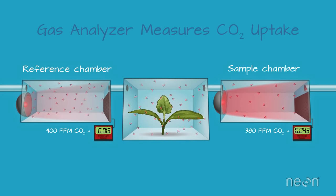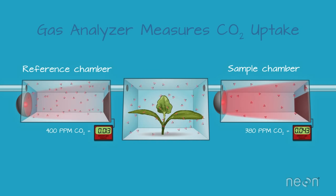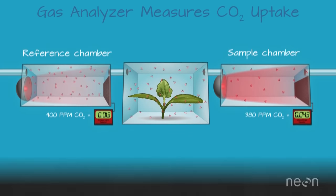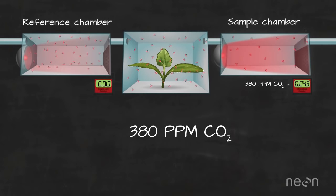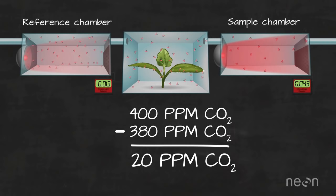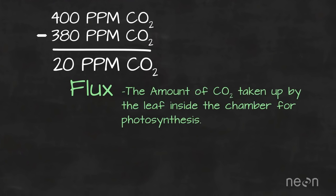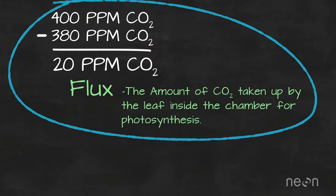We can control the volume of air moving through the chambers using a flow meter, so we know how much air is in each chamber. Here comes the interesting part. We can calculate the difference in the amount of CO2 measured in our reference chamber compared to the CO2 measured in our sample chamber. The difference between CO2 in the two chambers is the flux, which represents the amount of CO2 taken up by the leaf inside the chamber for photosynthesis. The measurement of the difference in CO2 between the two chambers is called net assimilation, or ANET.